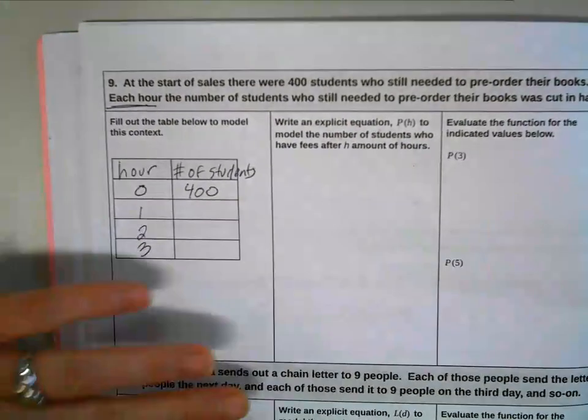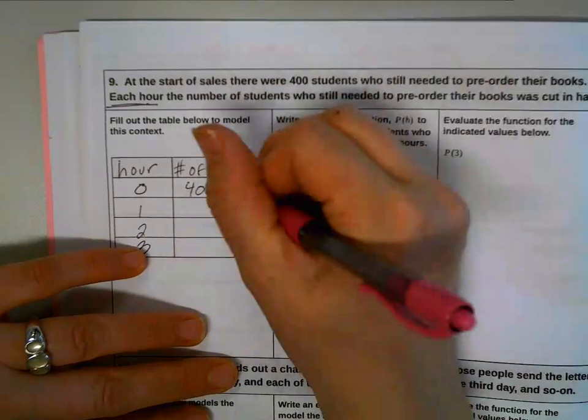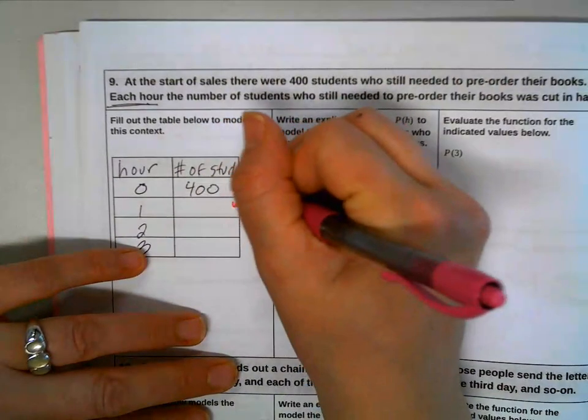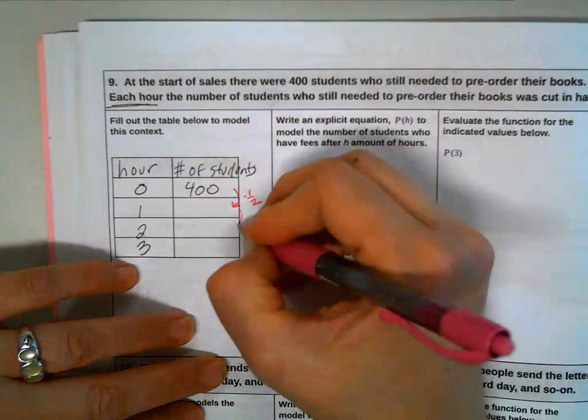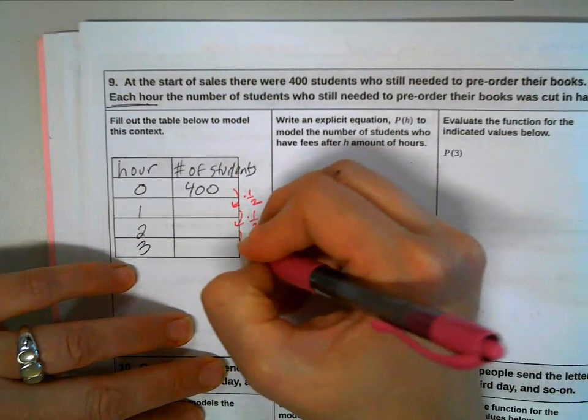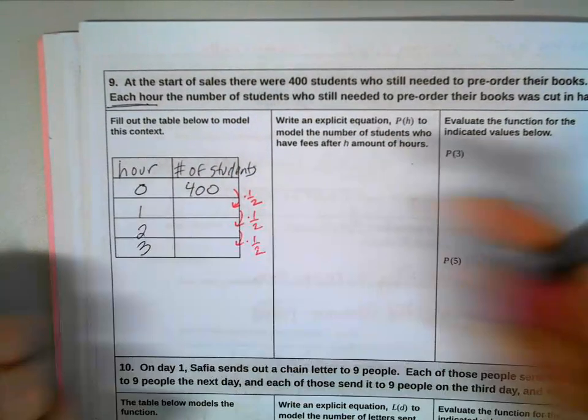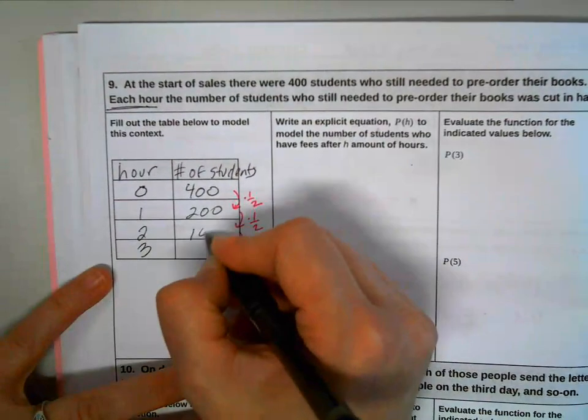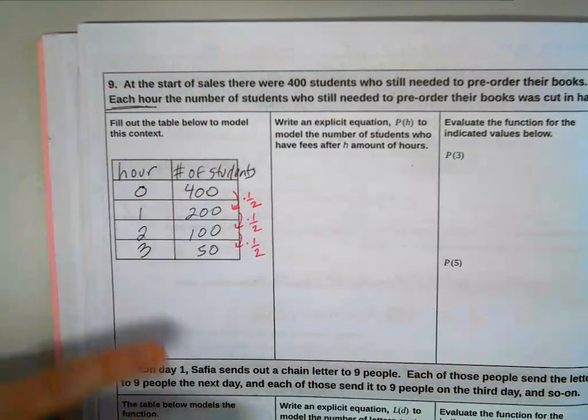Number of students, it's cut in half. That is dividing by 2, also known as multiplying by 1 half. So that's what I'm going to use right there. So this becomes 200, 100, and then 50. Great.